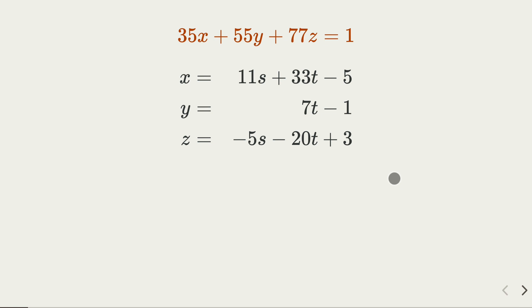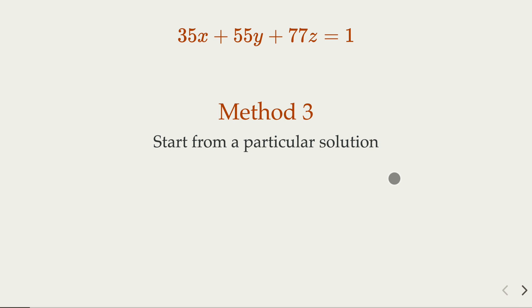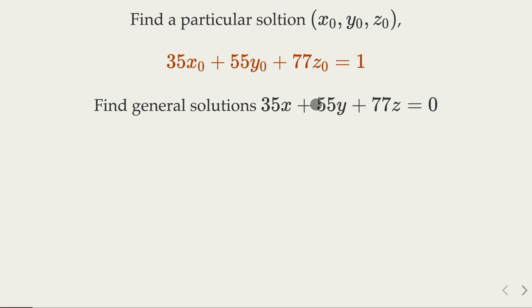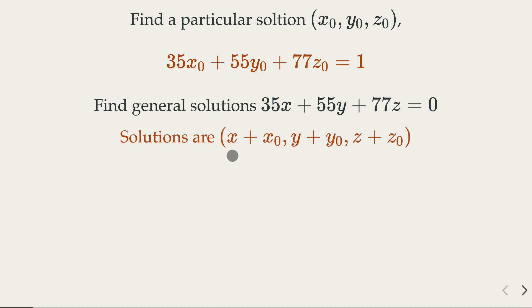Let's move on with method number three. In the third method, we start from a particular solution, and then find the general solution by changing the constant to zero. We find a particular solution x₀, y₀, z₀ satisfying the original equation. Once we have that, the general solution is found by changing the right-hand side to zero, and then x₀ + x gives the full general solution.